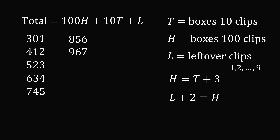What happens if we add 111 again? We get 1078, which corresponds to 10 boxes of 100 clips, 7 boxes of 10 clips, and 8 leftover clips — more than a three-digit number, but it still satisfies the conditions. Adding 111 again gives 1189: 11 boxes of 100, 8 boxes of 10, and 9 leftover clips. Now we've reached 9 in the leftover column, which is the maximum — going to 10 would require a new box of tens. So these are all the answers: 301, 412, 523, 634, 745, 856, 967, 1078, and 1189 — nine answers in total.